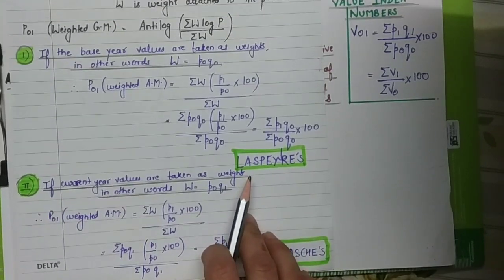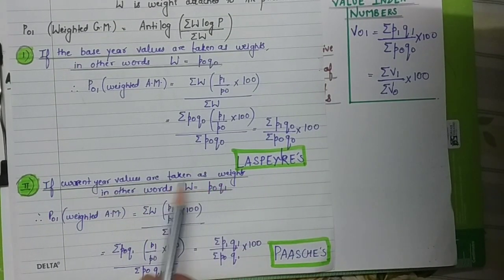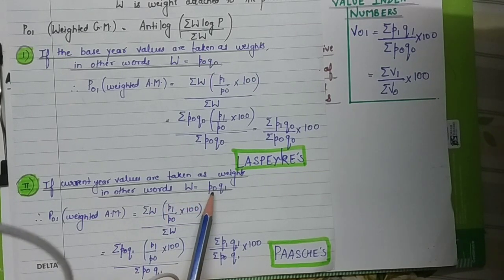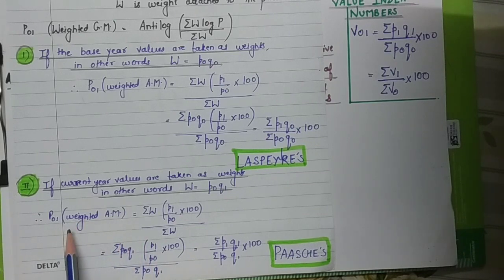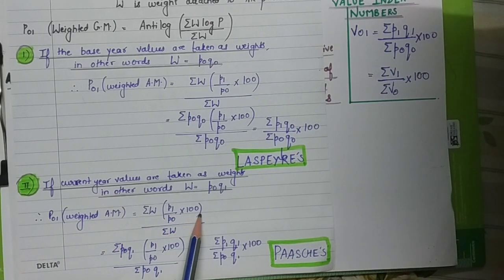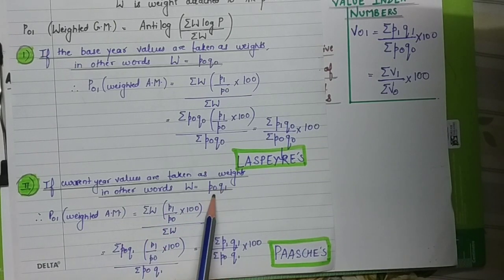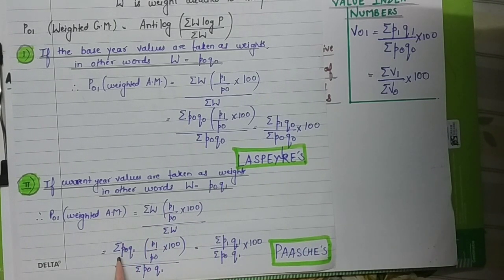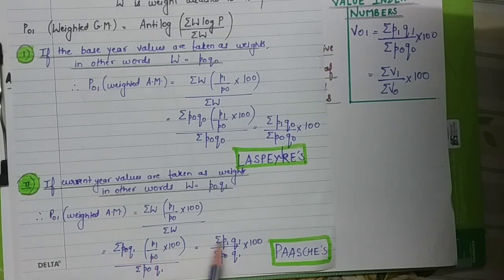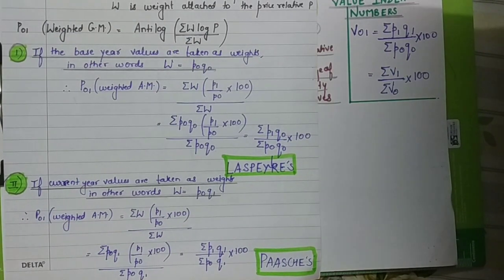In the second case, we use current year values as weights. Here W is replaced by P0 multiplied by Q1. So the formula becomes sigma(P0Q1 × P1/P0 × 100) divided by sigma(P0Q1). Here P0 cancels, leaving sigma(P1Q1) divided by sigma(P0Q1) into 100 in the numerator. This is Paasche's index number from the weighted aggregative method.